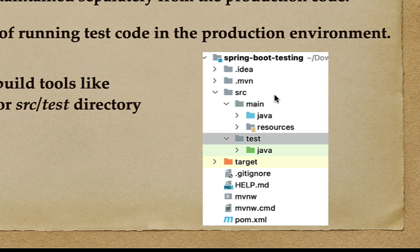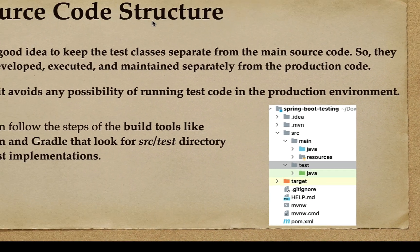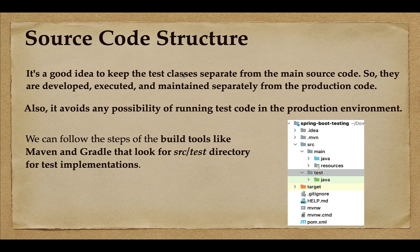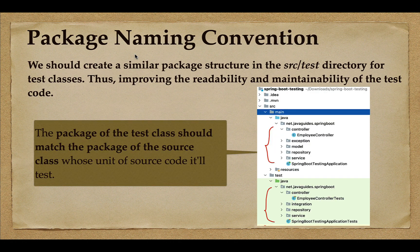We can follow the project structure that Maven has created — keeping all production-related code within the main/java package and all test classes within the test package. Make sure that whenever you write test classes in your project, you keep them separate from the main source code.